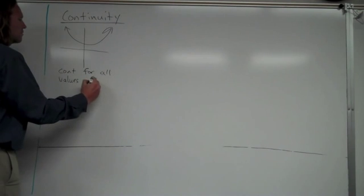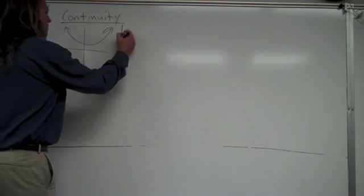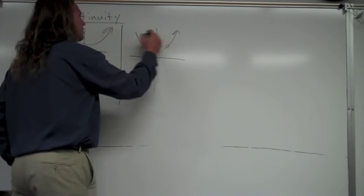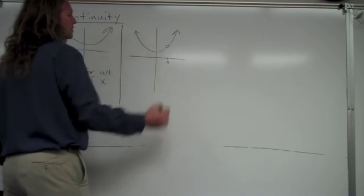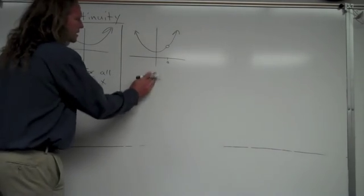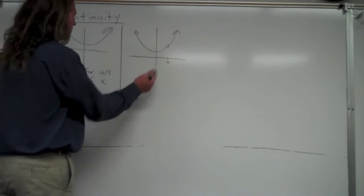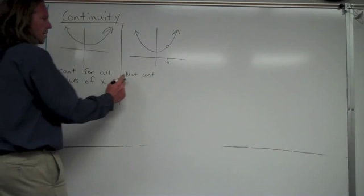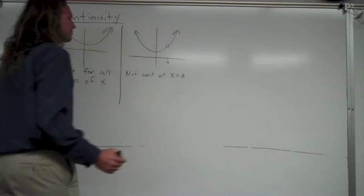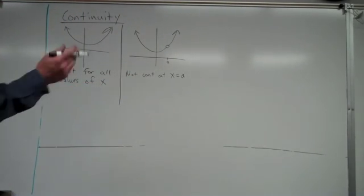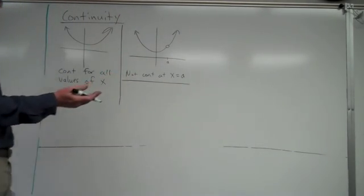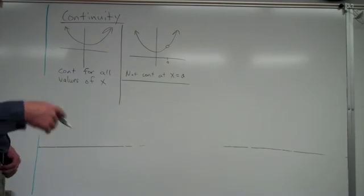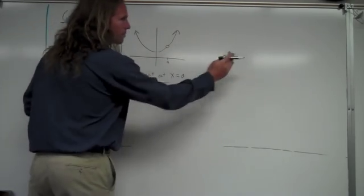Here's an example of something that's not continuous at a certain value. Say at that point I'll call it 'a' — this graph is not continuous at x equals a, or it has a discontinuity at x equals a. So we note: not continuous at x equals a. One way to discuss continuity is to say where it's not continuous; another is to say where it is continuous. This graph is continuous everywhere except at x equals a.